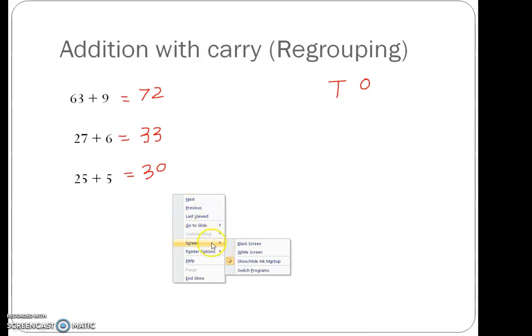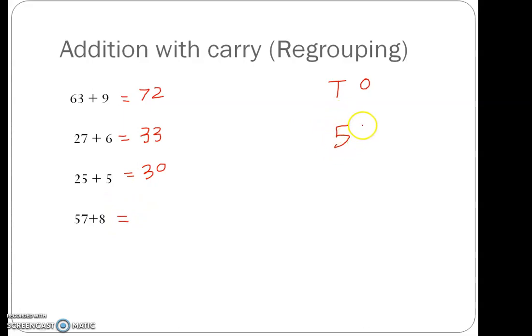Now let us look at another example. Let us arrange it in a place value chart. 57 is 5 tens and 7 ones, and 8 is 8 ones. 57 plus 8, after 7, 8, 9, 10, 11, 12, 13, 14, 15. So 15 ones is 1 ten and 5 ones.